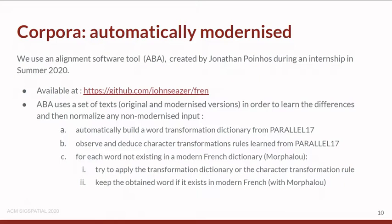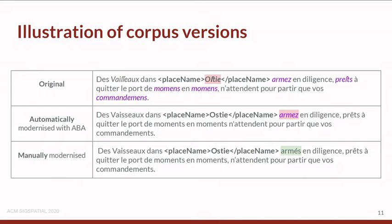For each word which doesn't exist in a modern French dictionary, Morphalou, it will try the transformation dictionary or transformation rules and will keep the obtained word if it exists in the modern French dictionary. Here is an illustration of our corpus versions. We first have the original version where we can observe some irregularities like the S-long. Then we have the automatically modernized version, where we can still observe that the word 'ARME' is not modernized, and finally our manually modernized version.